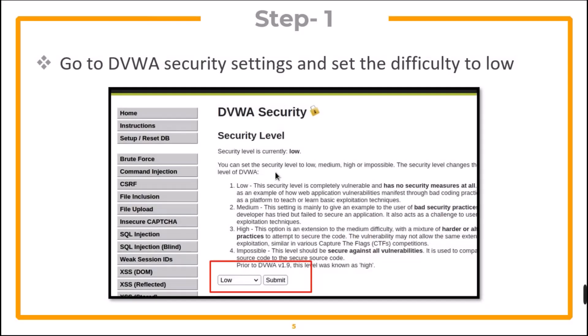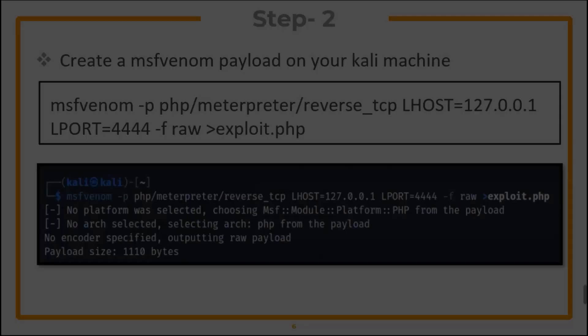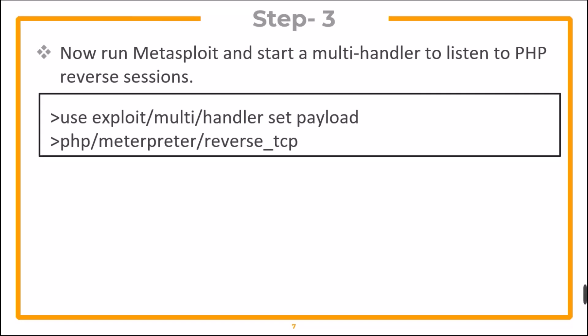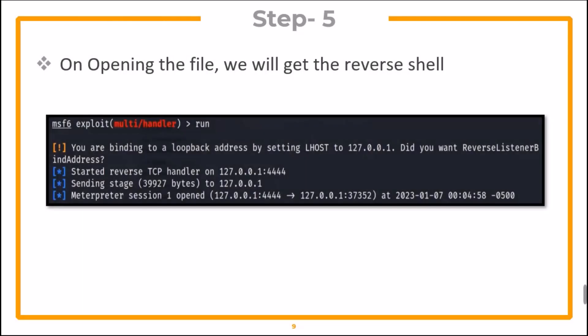First of all, go to DVWA security settings and set the difficulty to low. Now create an msfvenom payload on your Kali machine — just provide the IP address of your machine and LPORT. Run Metasploit and start a multi handler to listen to PHP reverse sessions. Now upload the file; it will be uploaded without any restriction. Then you can open the file in the browser and get the reverse shell.